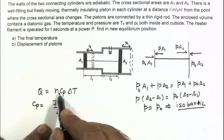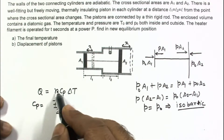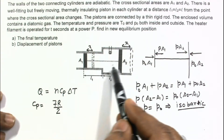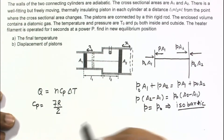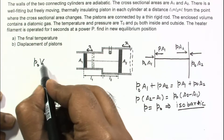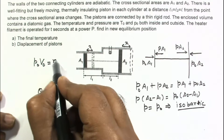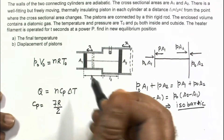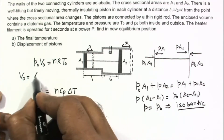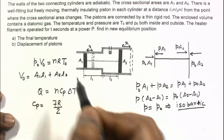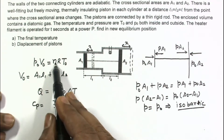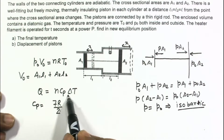The number of moles are not given, so we use the initial conditions to find N. We are given the initial pressure P0, the areas A1 and A2, and the initial lengths L1 and L2. From the initial condition, P0·V0 equals N·R·T0, where the initial volume V0 equals A1·L1 plus A2·L2. Using this equation, Q is known and N can be found, Cp is known, and we can find the change in temperature ΔT.